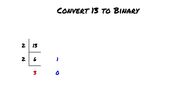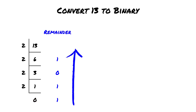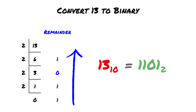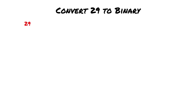3 divided by 2 is 1 remainder 1, and 1 divided by 2 is 0 remainder 1. We'll then read all the remainder values from bottom to top to get the binary representation. Thus the binary representation of the decimal number 13 is 1101. We'll do another example — let's convert 29 into binary.